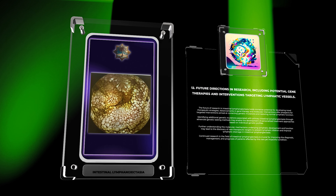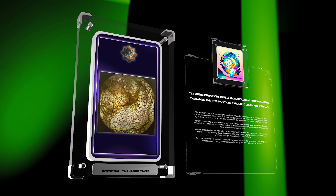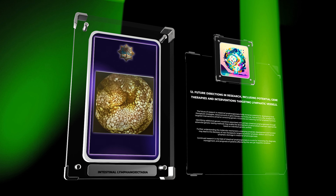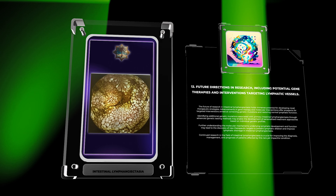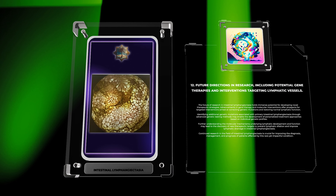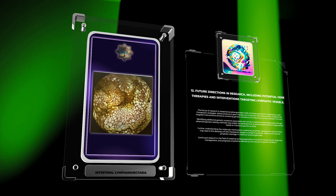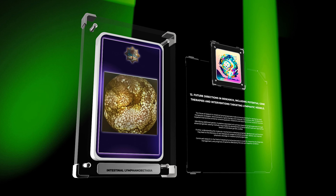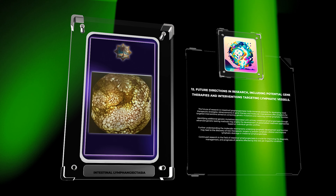Identifying additional genetic mutations associated with primary intestinal lymphangiectasia through advanced genetic testing may enable the development of personalized treatment approaches based on individual genetic profiles. Further understanding of the molecular mechanisms underlying lymphatic development and function may lead to the discovery of new therapeutic targets to prevent lymphatic dilation and improve lymphatic drainage.